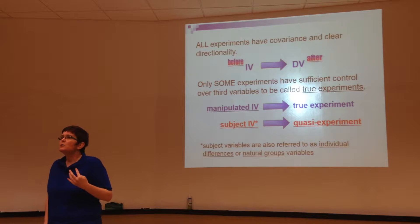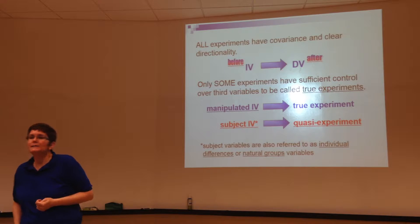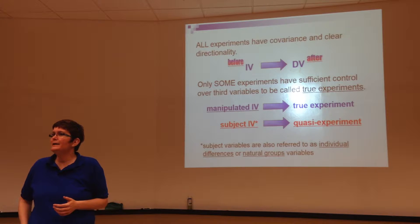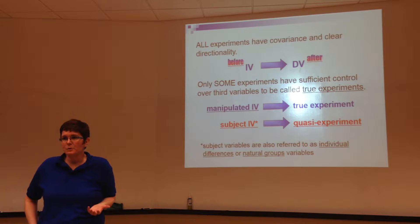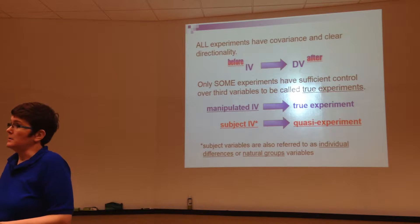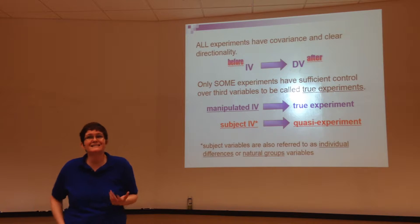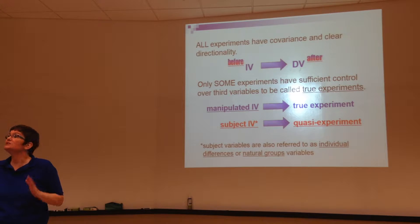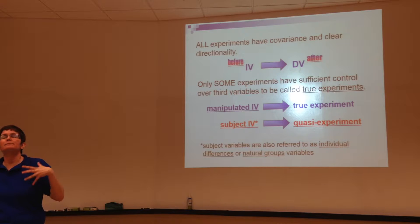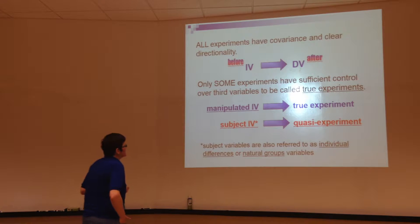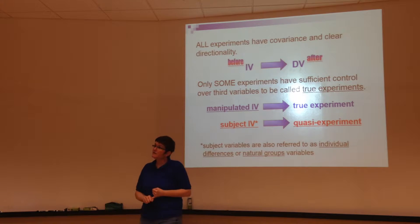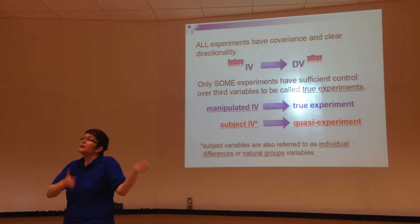You are what you are when you walk in the door. We refer to that as a subject variable — it reflects a pre-existing state or experience or condition that the subject has. Sometimes these subject variables are referred to as individual differences variables because they reflect actual differences among individuals — do you identify as black, white, Latino, Chinese? We also call them natural groups variables because they reflect naturally existing groups in the world.